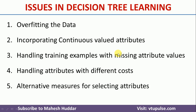The last issue in decision tree learning is alternative measures for selecting the attributes. While drawing the decision tree, we use the information gain in the ID3 algorithm. Using that particular information gain, we select one attribute among the set of attributes as a root node. Then the similar process is followed by calculating the information gain for the remaining attributes and selecting one attribute from those, then drawing the decision tree.